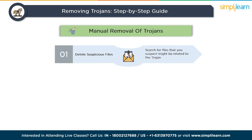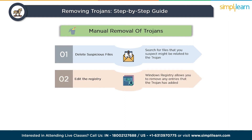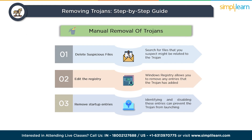For manual removal, first delete suspicious files that you suspect might be related to the trojan — these may be located in system folders or temporary directories. Be cautious not to delete files essential for your operating system. Next, edit the Windows registry to remove trojan-related entries, but exercise extreme caution as modifying the registry can have serious consequences if done incorrectly. Finally, remove startup entries associated with the trojan, as trojans often add entries to ensure they run every time your computer boots up.